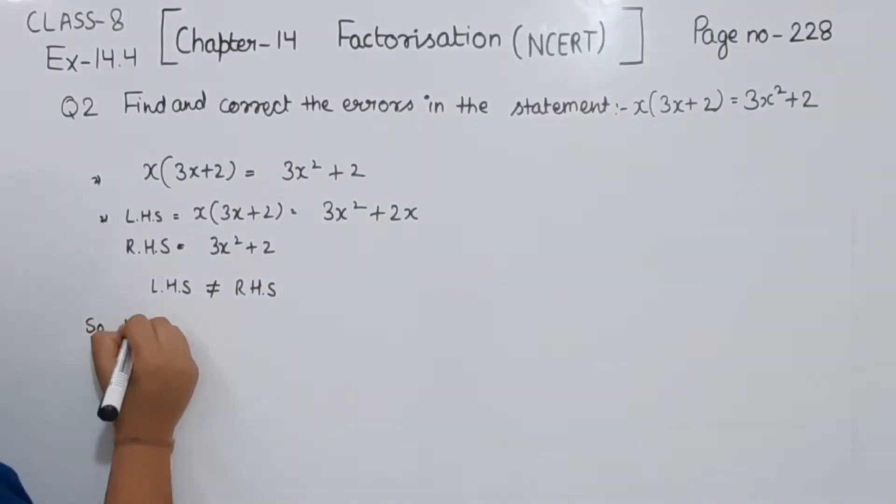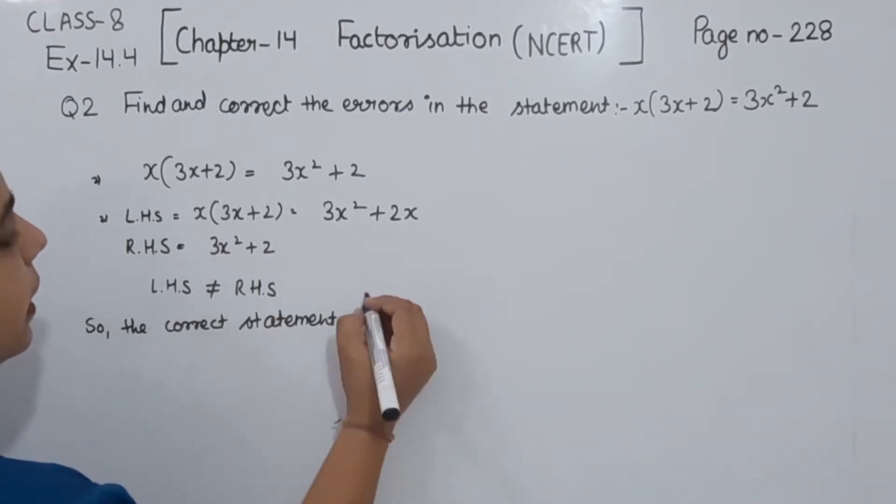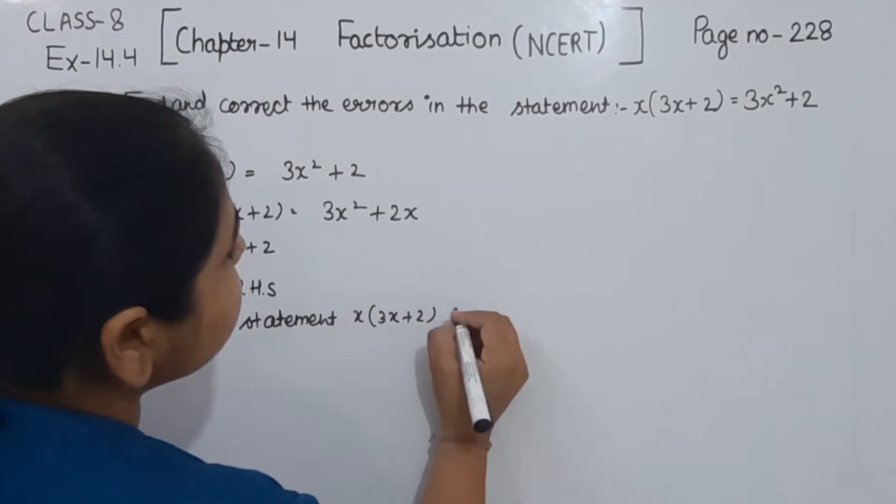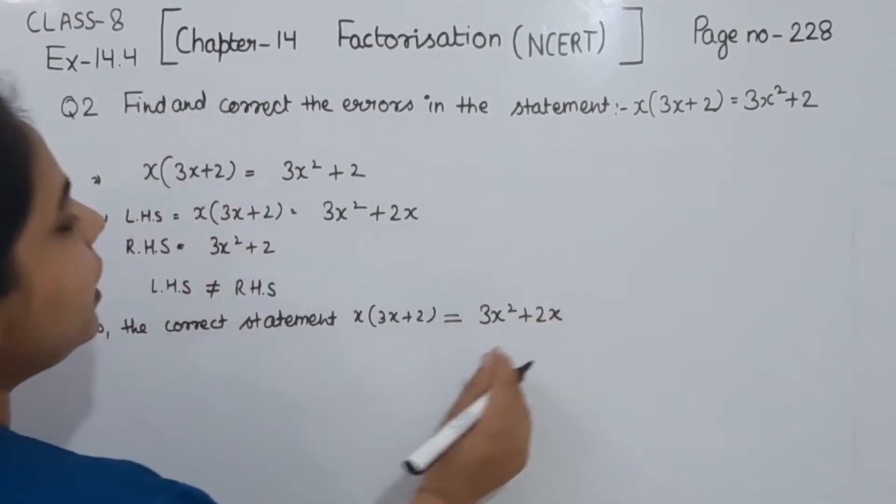So the correct statement is x multiplied by 3x plus 2, this will be equal to 3x squared plus 2x.